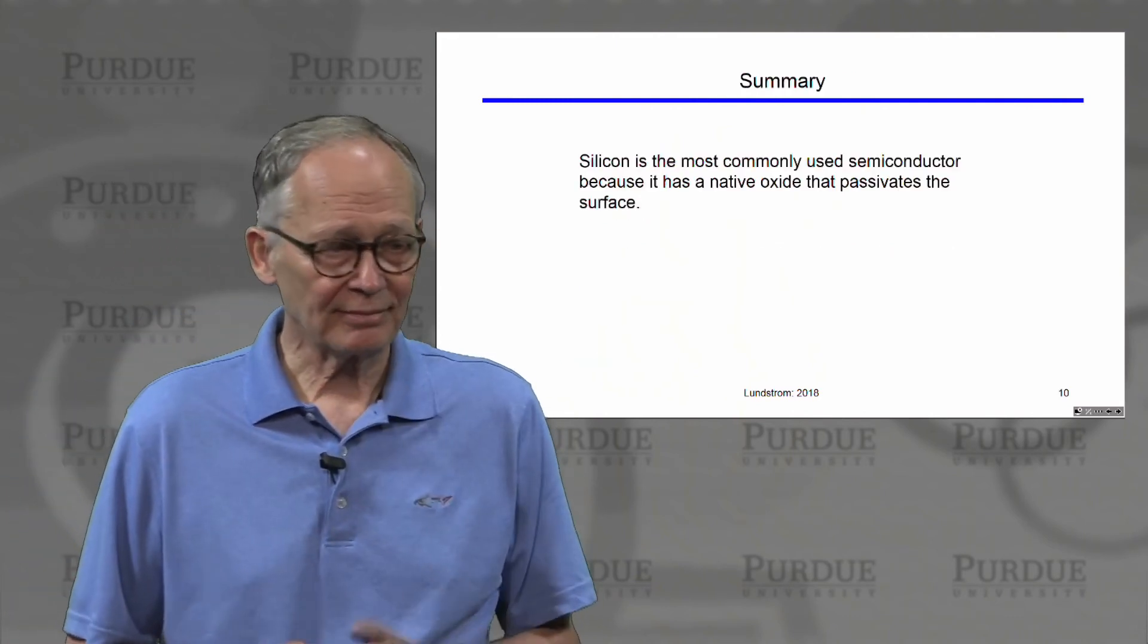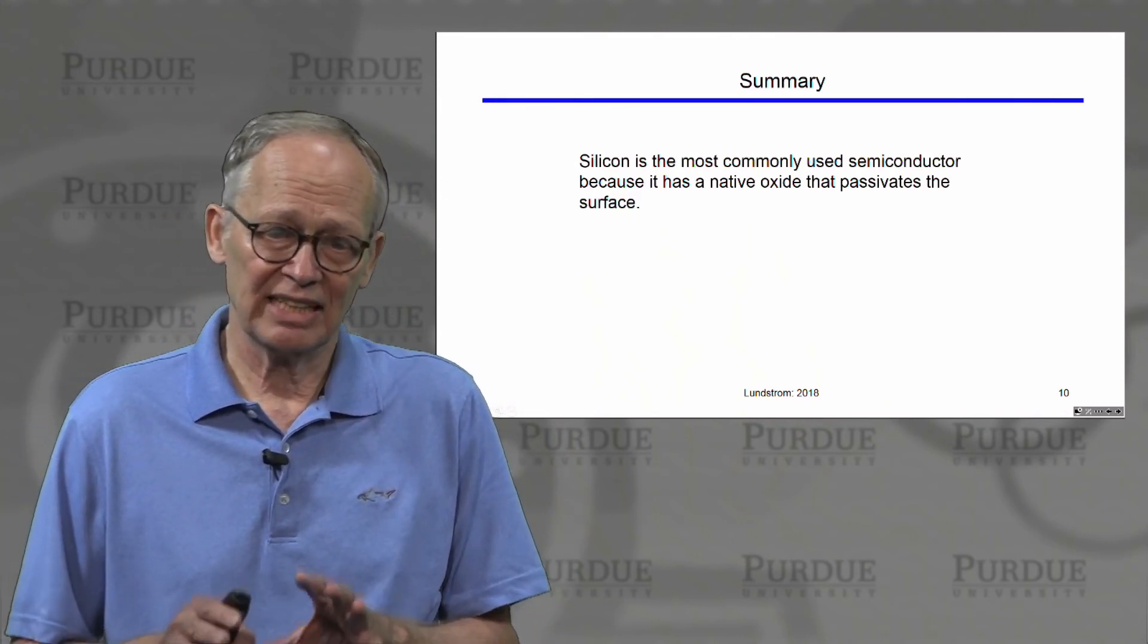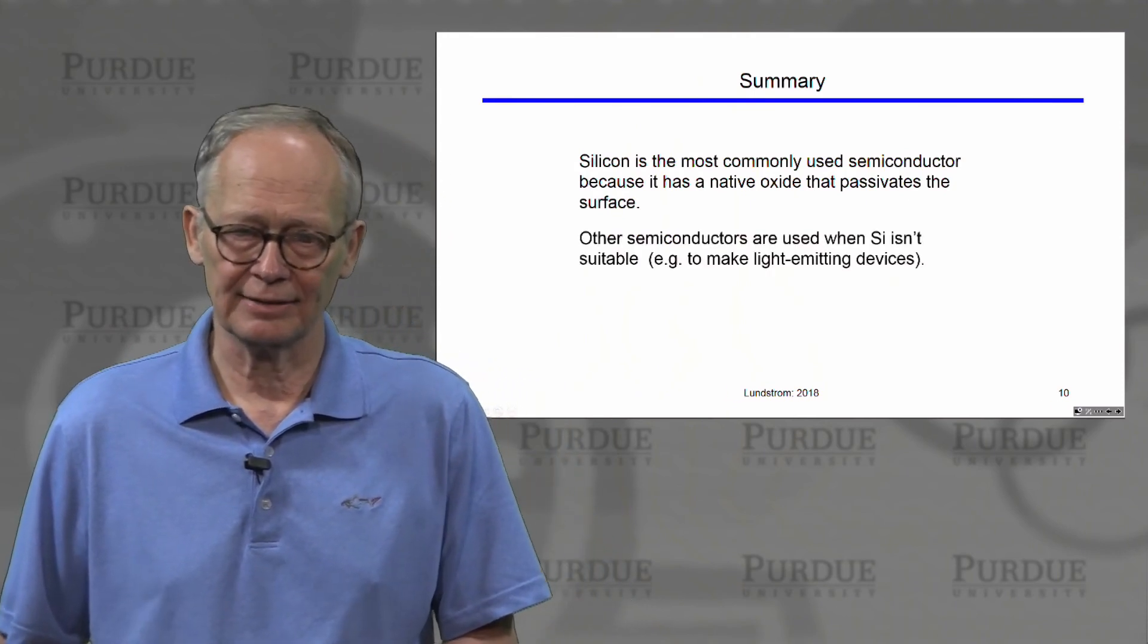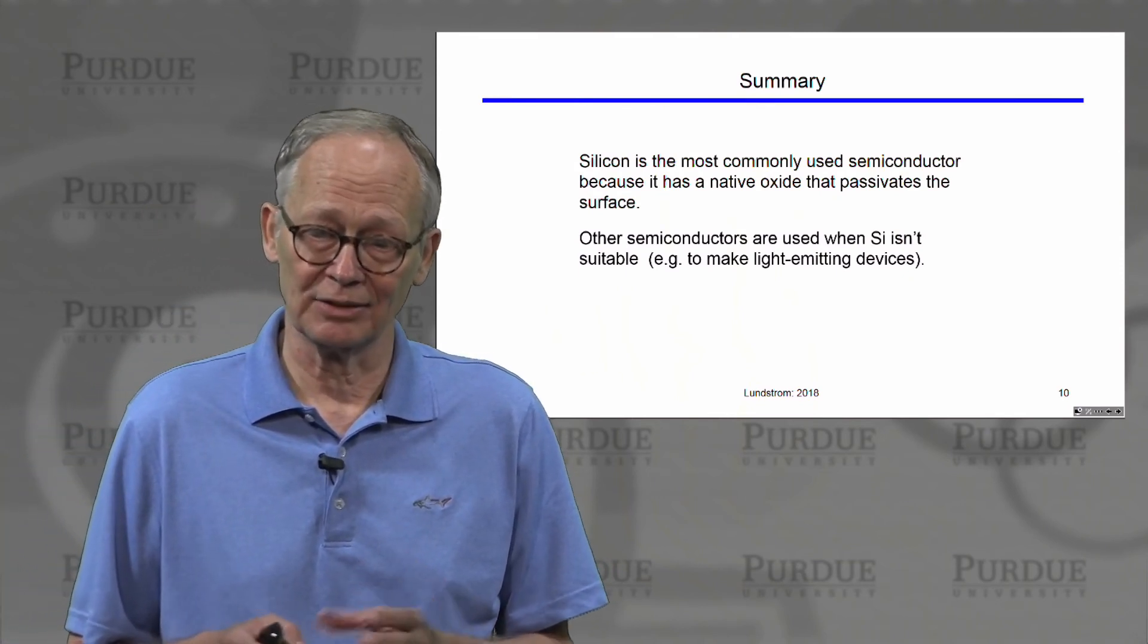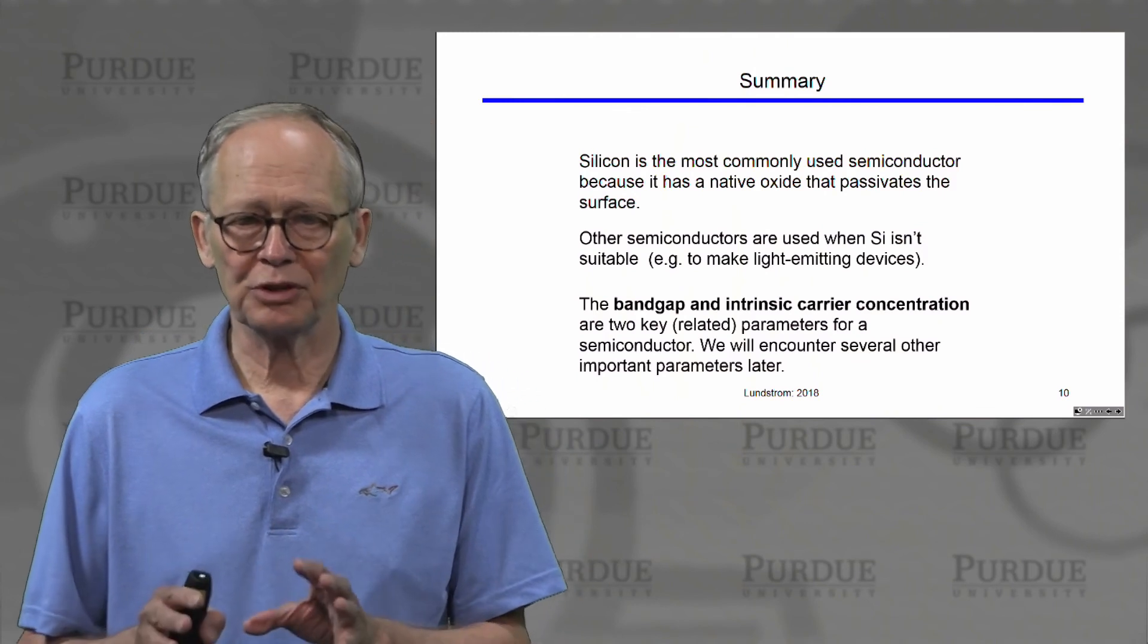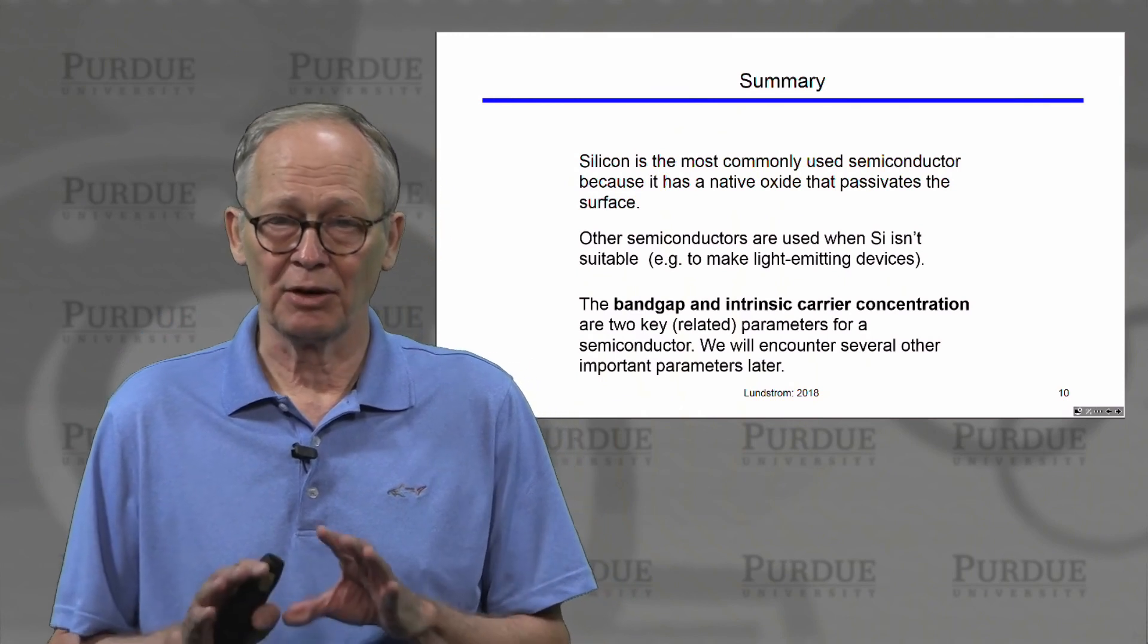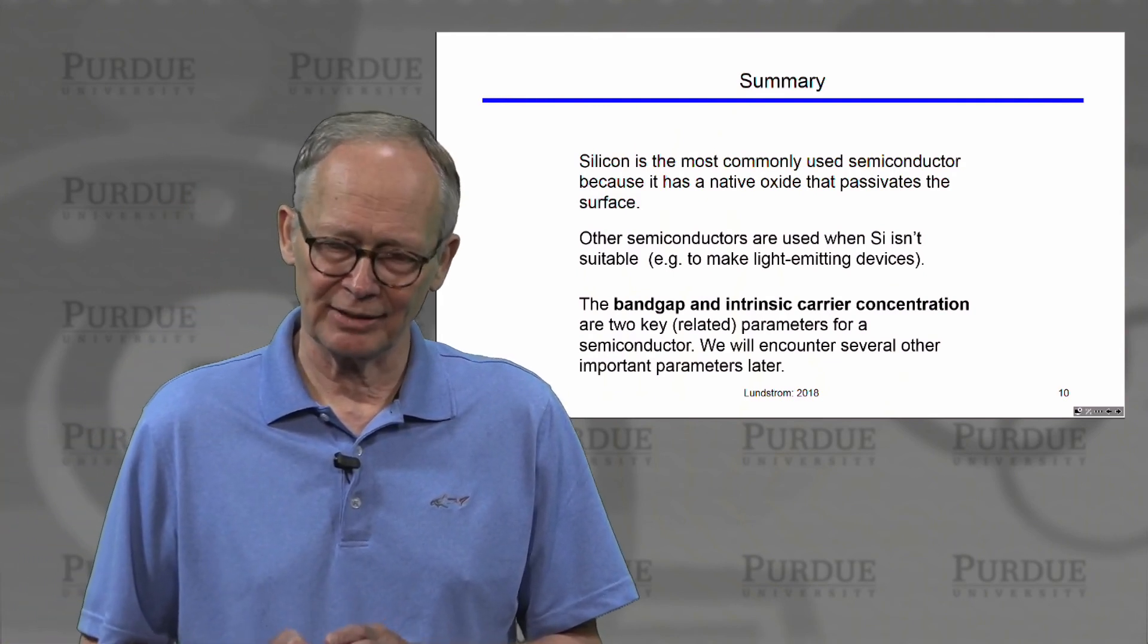So just to summarize, silicon is the most commonly used semiconductor, not because it has the best electronic properties of any semiconductor, but it has good electronic properties, but the primary reason that it's used so extensively is that it has this native oxide that passivates and renders defects on the surface electrically inactive. Other semiconductors are used when silicon just isn't suitable. One example is to make light-emitting diodes. Silicon doesn't have this property of emitting light when recombination occurs. And the two most important parameters of a semiconductor, the first two things we generally look at are what is its band gap, and then what is its intrinsic carrier concentration, which is related to its band gap. There are other parameters that we'll discuss as the course evolves, but these are the two first parameters that we look at when we're considering semiconductors for applications.